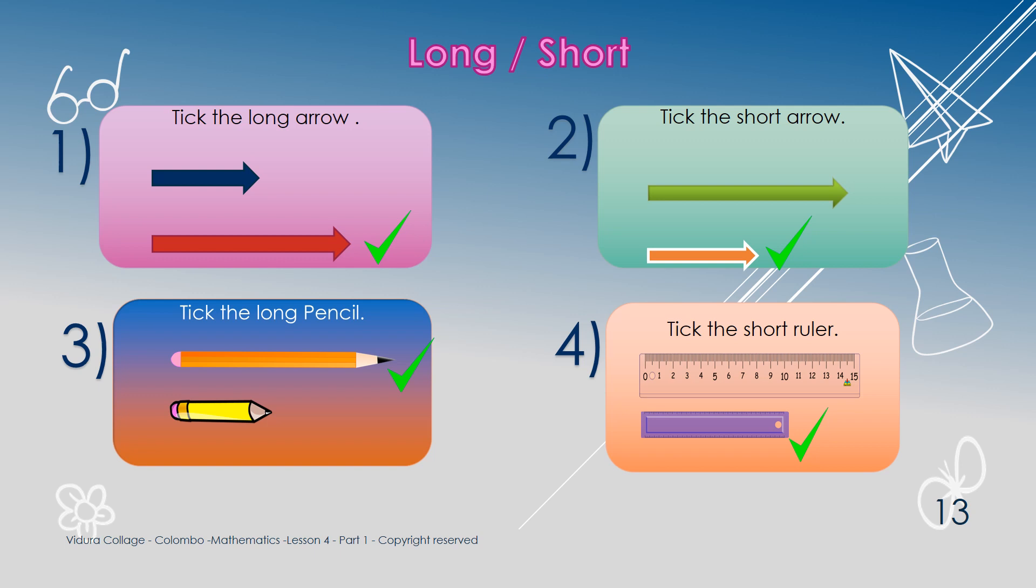Please tick the correct answer. First one, tick the long arrow. Second one, tick the short arrow. Third one, tick the long pencil. Last one, tick the short roller. Alright, now parents can mark this for your child.